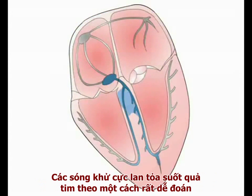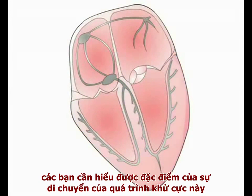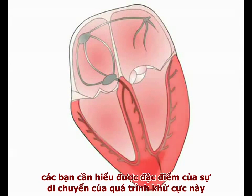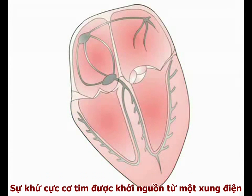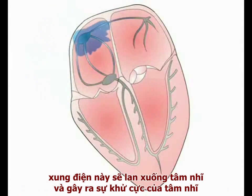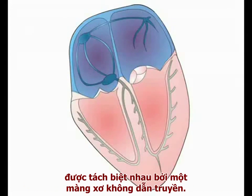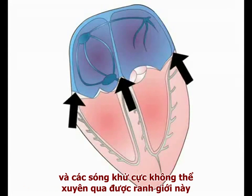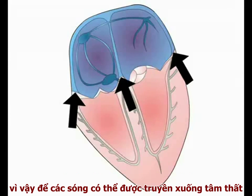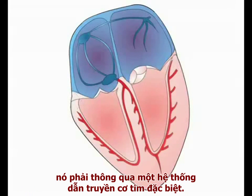The depolarization wave spreads through the heart in a highly predictable pattern, and to understand the ECG readout, the pattern of spread of cardiac depolarization needs to be understood. Cardiac depolarization is triggered by an electrical pulse generated in the sinoatrial node. This electrical pulse then spreads through the atria, triggering their contraction late in diastole. The atria and ventricles, however, are separated by a non-conducting fibrous septum. The depolarization wave cannot penetrate this barrier, and in order to activate ventricular contraction, the wave must be transmitted into the ventricles by the specialized cardiac conducting system.